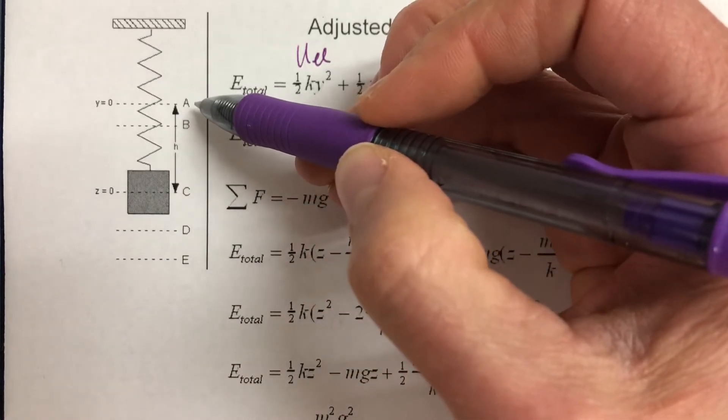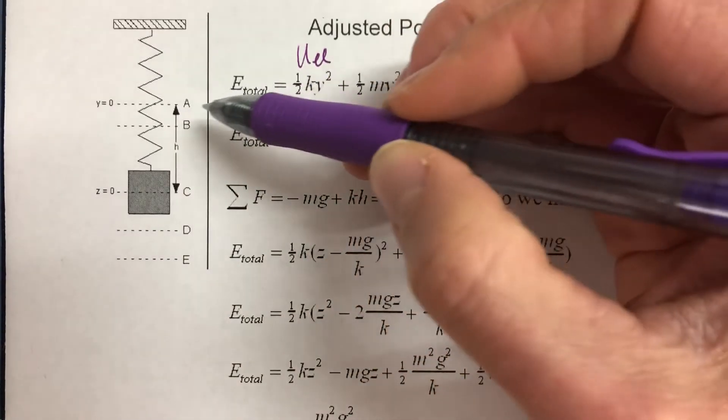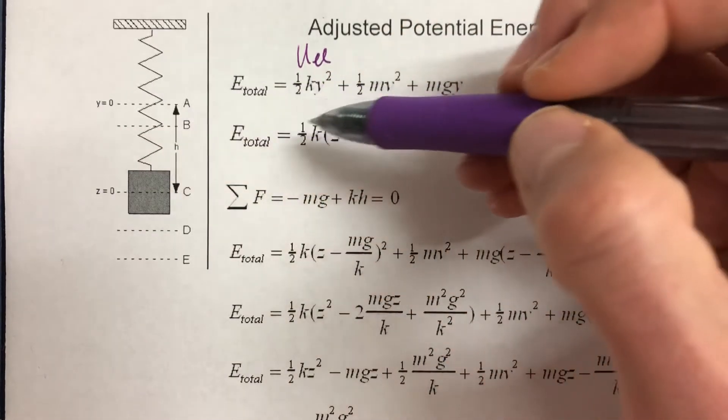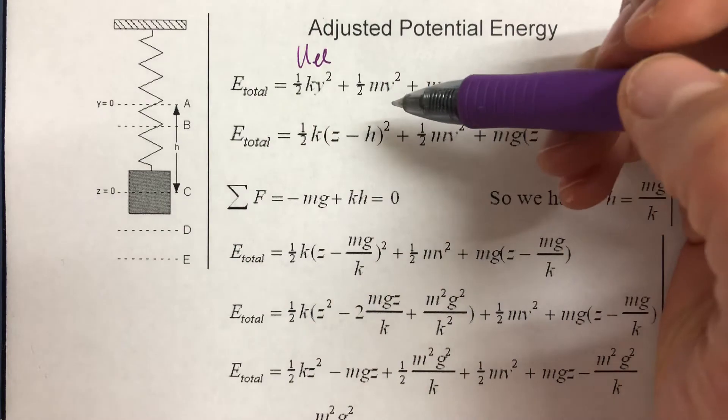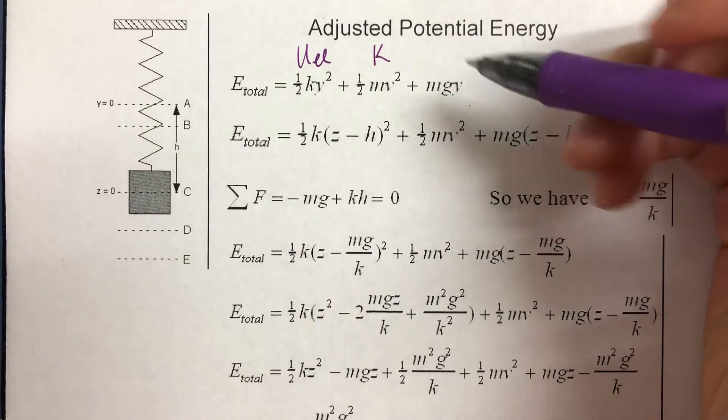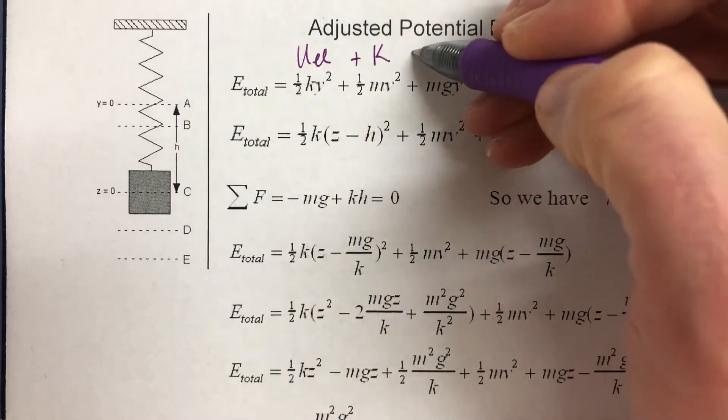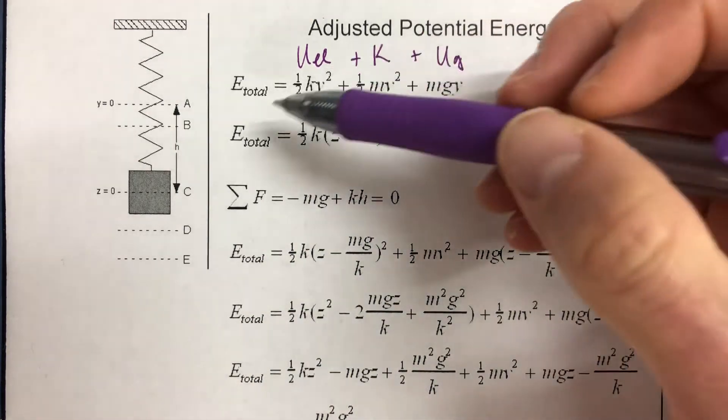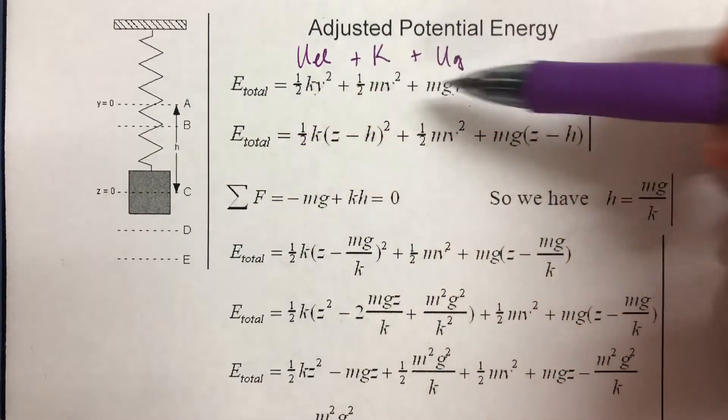Since y is set up here, it's just measuring from that position. Then you have 1/2 m v squared, that's your kinetic energy. And then you have mgy, that is your gravitational potential energy. And that's just being measured from y, the same point as the spring.